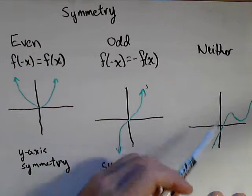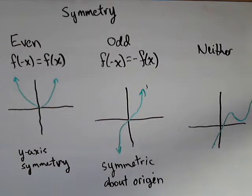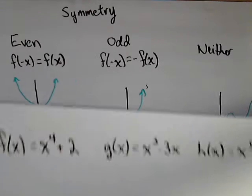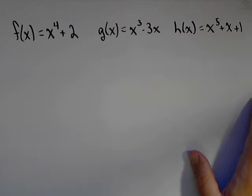Finally, we have neither, which means there's no symmetry. Most functions in general are neither. So let's talk about how to show this algebraically. I've got a few examples here, and we're going to do one of each.